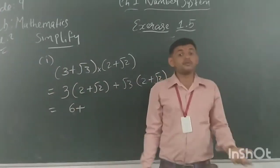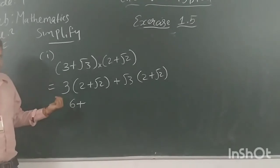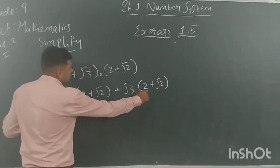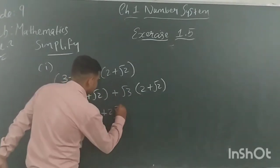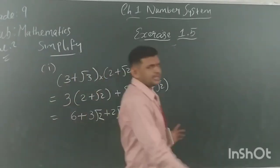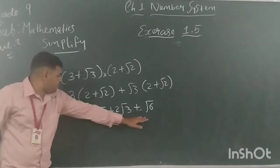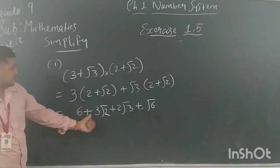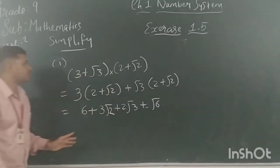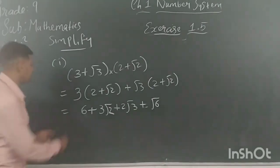Some of you may write 3 into root 2 as root 6 — but note that when there are two roots being multiplied, you combine them under one root sign, so root 3 times root 2 becomes root 6. Checking for like terms in 6 + 3 root 2 + 2 root 3 + root 6: there are no like terms, all have different variables. So we cannot simplify further — this is the final answer.